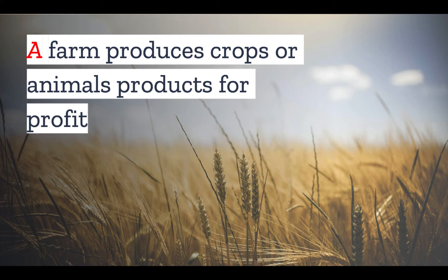As we saw from the USDA definition, this profit does not have to be very large, so there are a wide range of enterprises that could be defined as a farm. Some of the most common ones include crop farms — these are the sorts of farms that produce those wide expanses of wheat or soybeans that you see when driving across the country — but they also include small family farms as well as specialty farms such as Christmas tree farms or lavender farms.